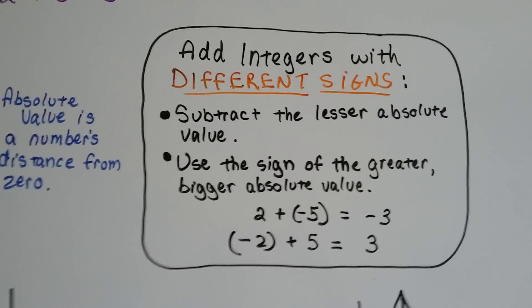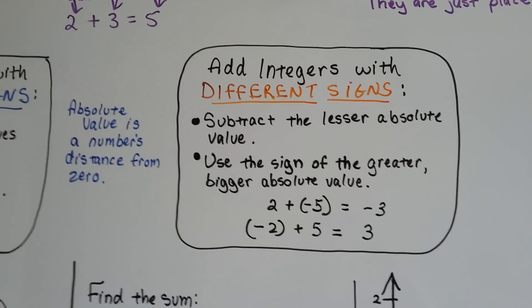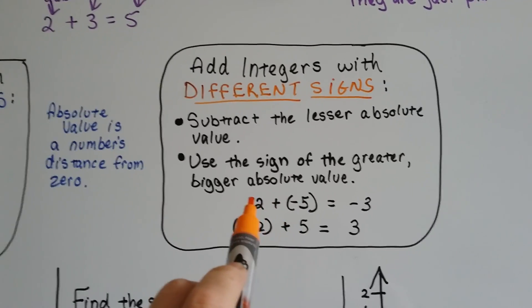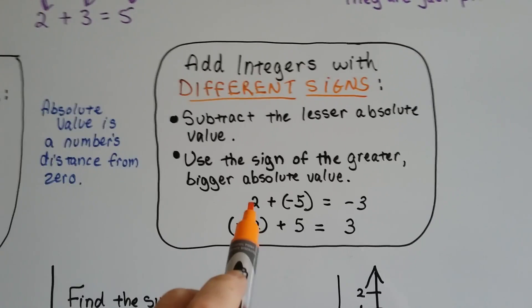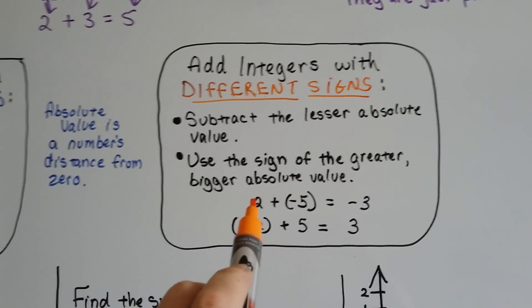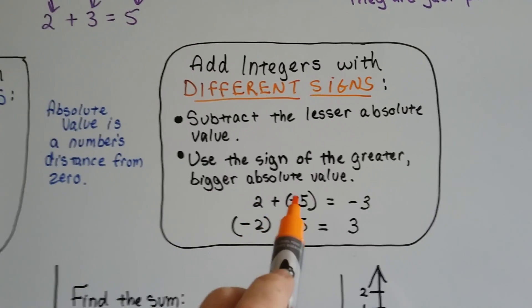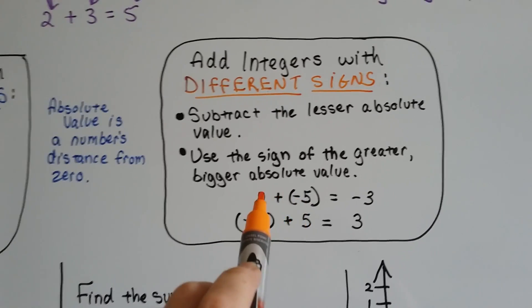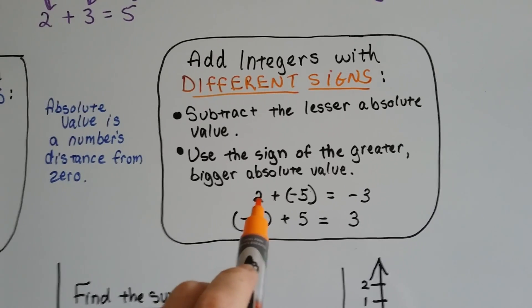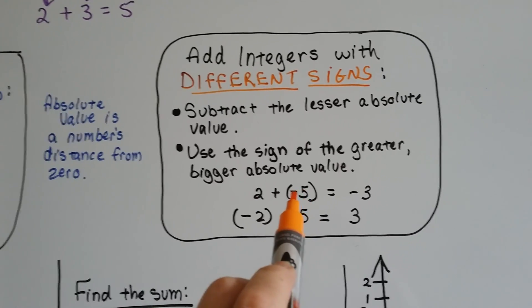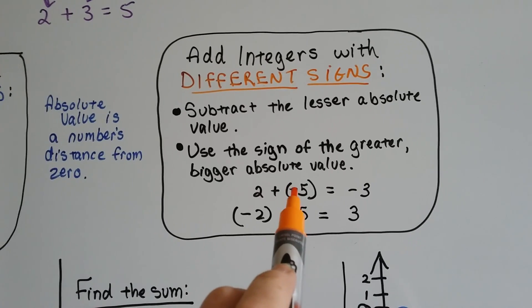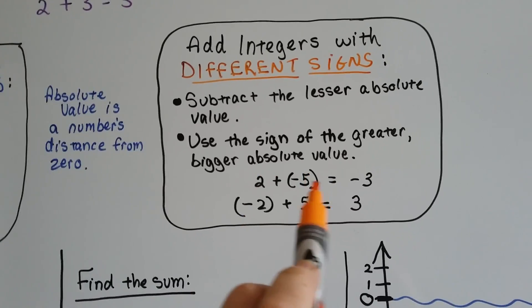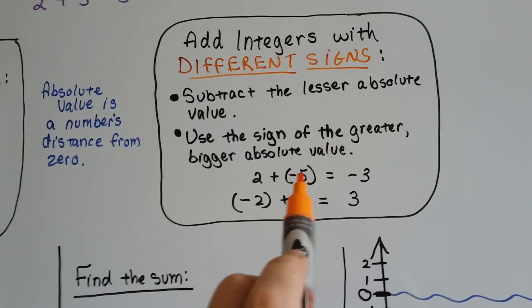When we have a different sign for each one, like a positive 2 and a negative 5, we subtract the lesser value. The absolute value of 2 is 2, and the absolute value of negative 5 is 5, because it's 5 away from zero. Then we subtract the lesser one — we take the 2 from the 5 and get 3 — and we use the sign of the bigger absolute value. Since 5 is bigger than 2, we use the negative sign that the 5 has.